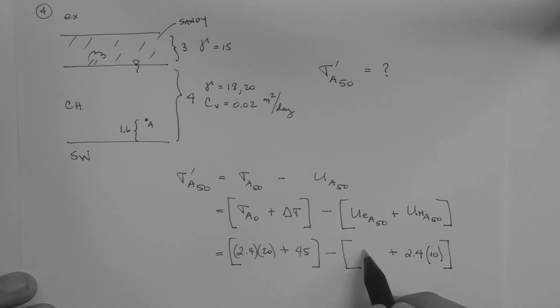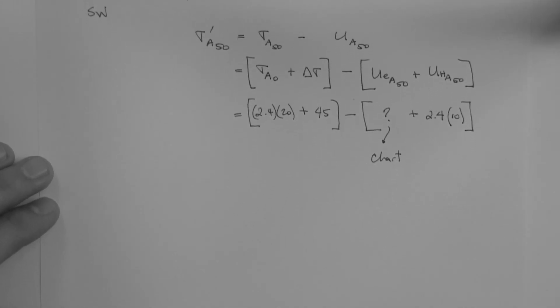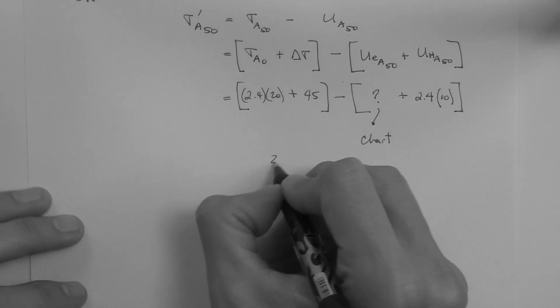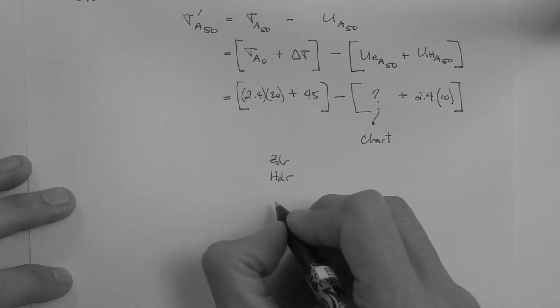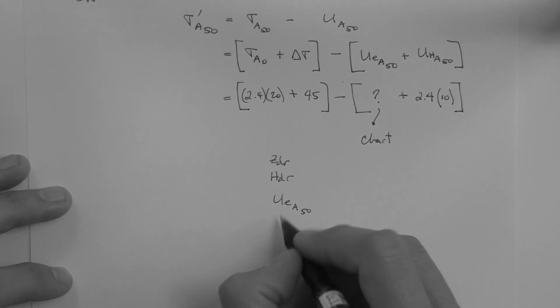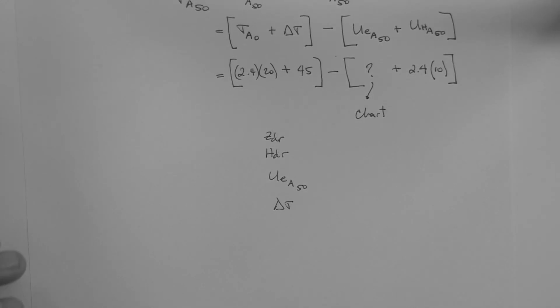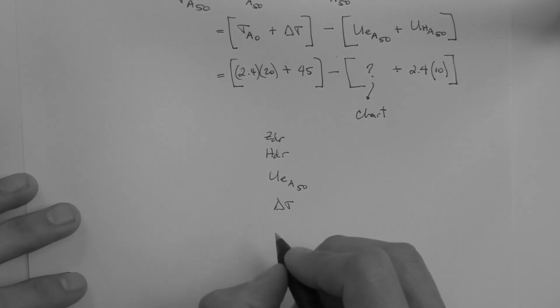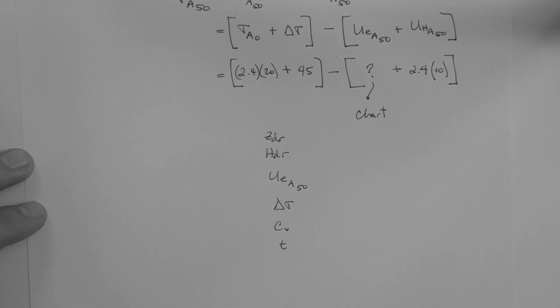So now the question is, how do we get this? We have to use the isochrons chart, this one right here. To do so, we have to list all the parameters that are present in the chart, ZDR, HDR, these two make up the y-axis, the x-axis is made by UE, in this case at point A, 50 days, and delta sigma. And then the internal axis has the dimensionless time, capital T, which is CV times T, divided by HDR squared. So all these parameters here are the ones that are involved in the chart.